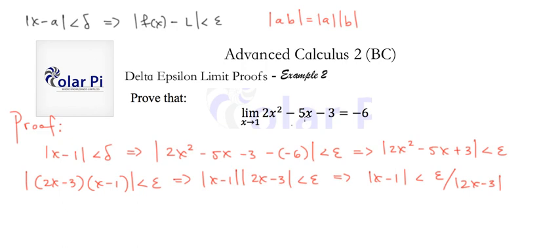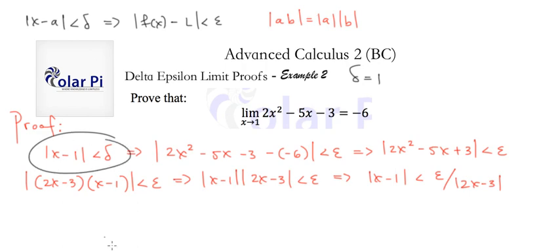To get delta in terms of purely numbers and epsilon, we make an assumption: set delta equal to 1. This assumption makes sense because if delta = 1 is small enough for your epsilon requirements, great. If not, we'll find another value of delta that will definitely be good enough. With delta = 1, we can say |x - 1| < 1.